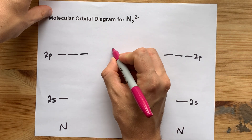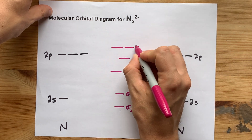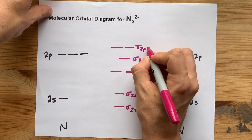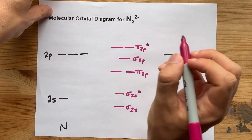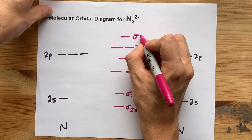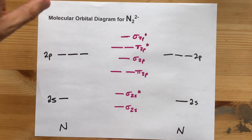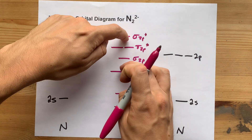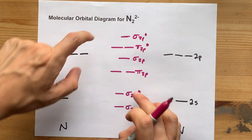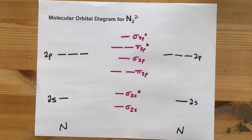Next highest, we have the pi-2p anti-bonding orbitals and the sigma-2p anti-bonding orbitals. I tried to center that relative to these.